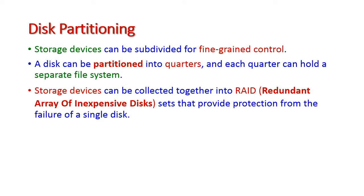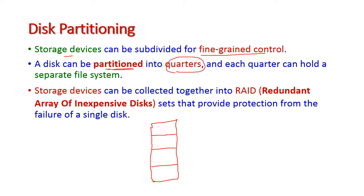These storage devices can be subdivided into fine-grained controls. The secondary storage device is very large in size compared to main memory, and that memory will be divided into fine-grained controls called partitions. Each partition may hold a separate file system — for example, a Windows file system or a Unix file system. Storage devices can also be collected together into RAID, which stands for Redundant Array of Inexpensive Disks, containing a collection of disks that provides protection from the failure of a single disk.